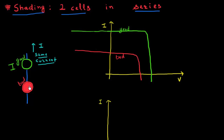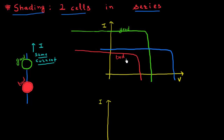So what I would expect is the IV characteristic of this overall system would look something like this, where the voltages across these two cells would add up, and the current would be essentially equal to, or close to, the current in the bad cell. Now the only thing I'm left to determine is what exactly should be the value of this short circuit current, or what should be the short circuit current of this overall system?